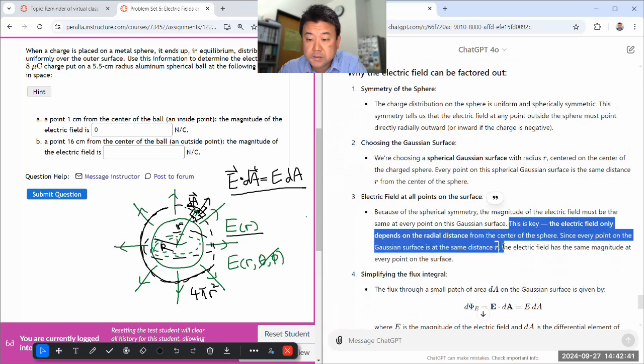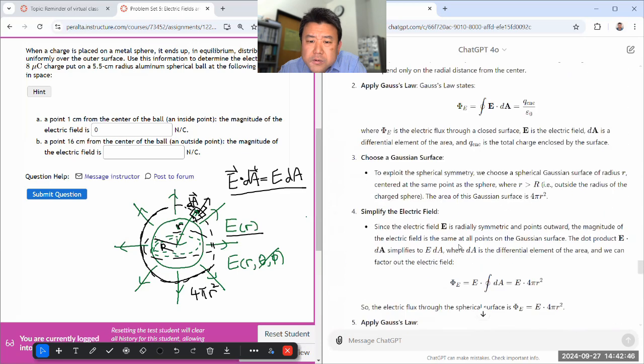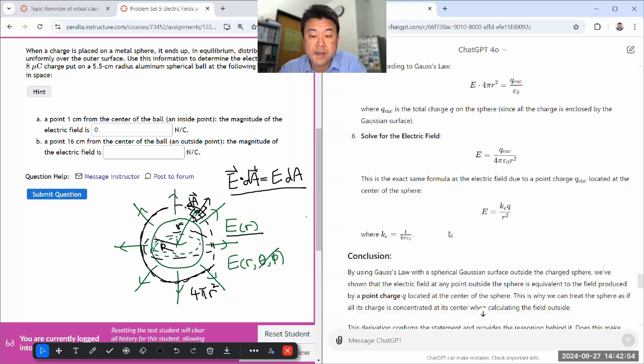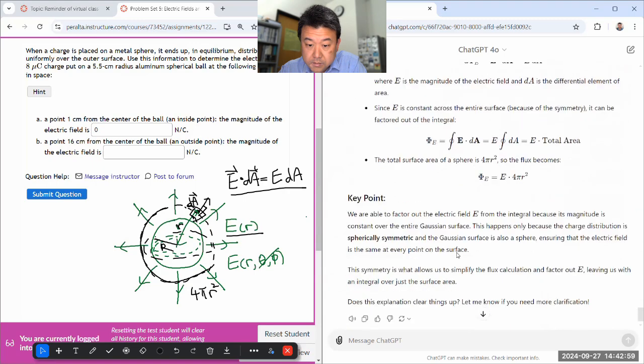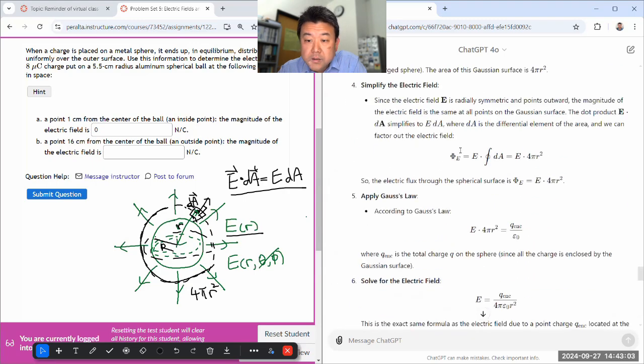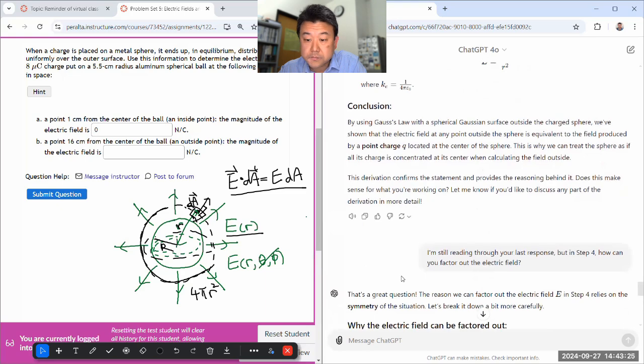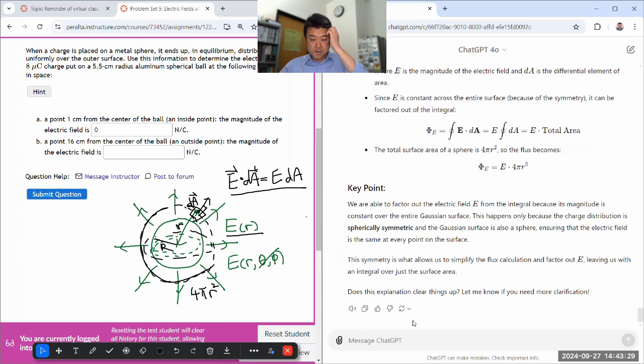So flux is E four pi r squared and apply Gauss's law. Q enclosed divided by that. Solving for electric field. That's the same formula as the charge due to point charge at the center of the sphere. I think I got it. Plugging in numbers, I get. And let me just make a simple mistake of ignoring all the metric prefixes. So I get 2.378. Is that correct? It should say that I forgot powers of 10.